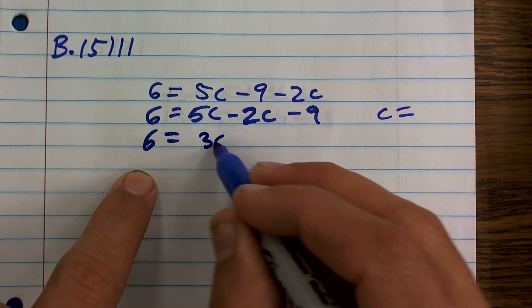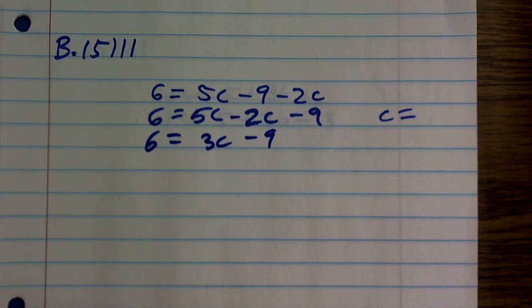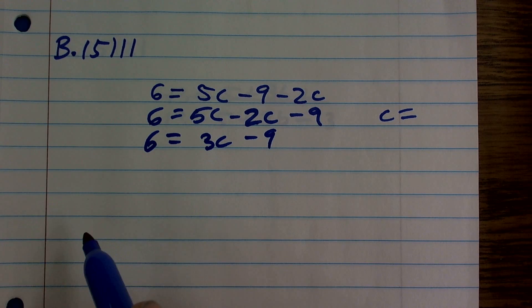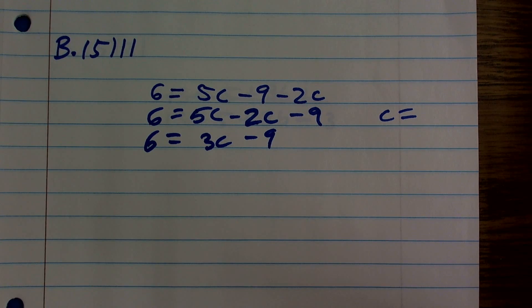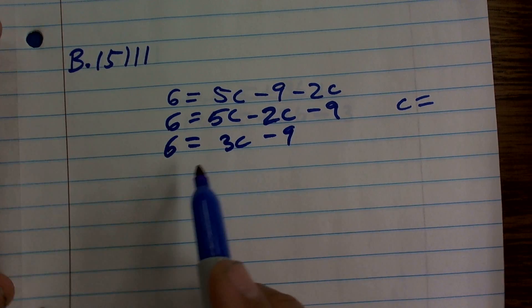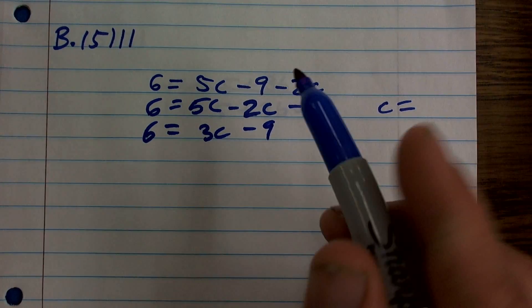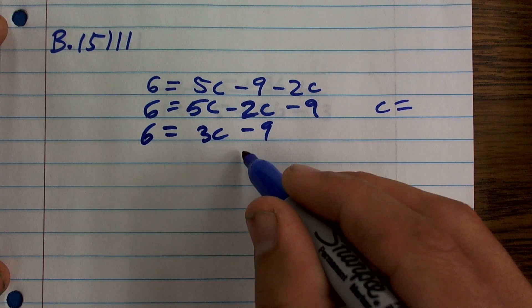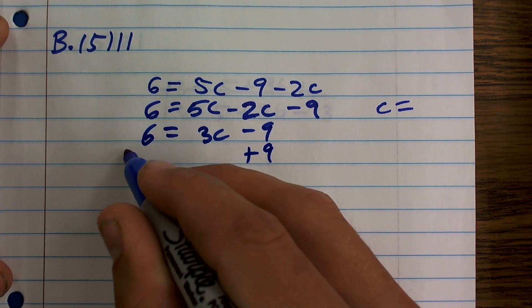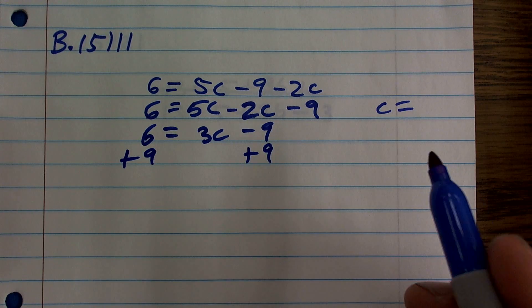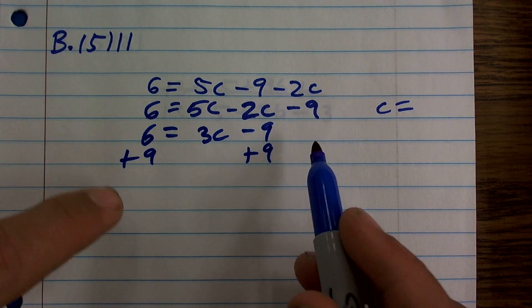So 6 equals 3c minus 9. Now we're looking pretty good because now it's a two-step equation. I just need to undo what's happening to my variable to get my variable by itself. The first thing we always undo is addition and subtraction. So I'm going to undo subtraction by addition. I'll add 9 on both sides, addition property of equality.